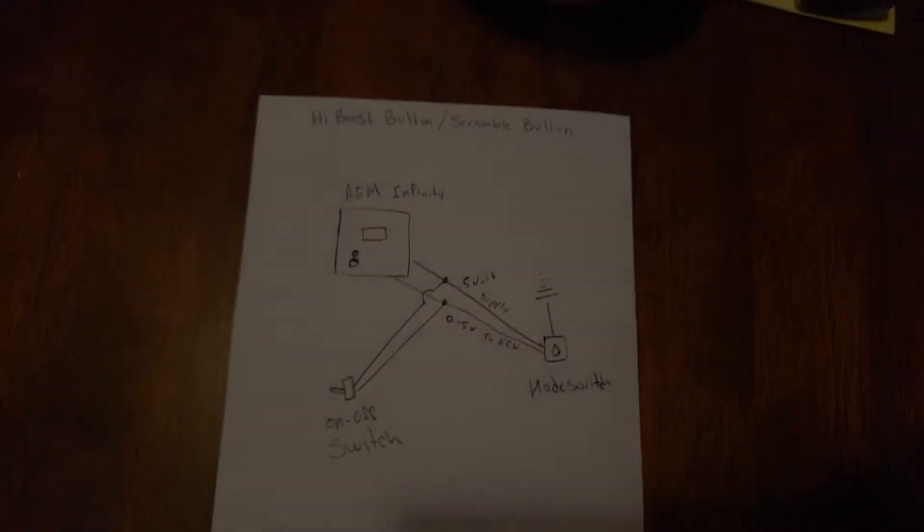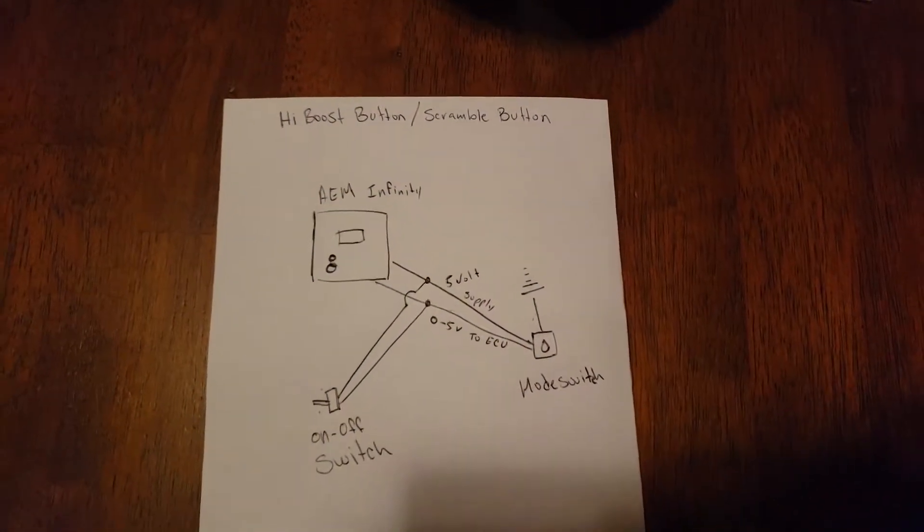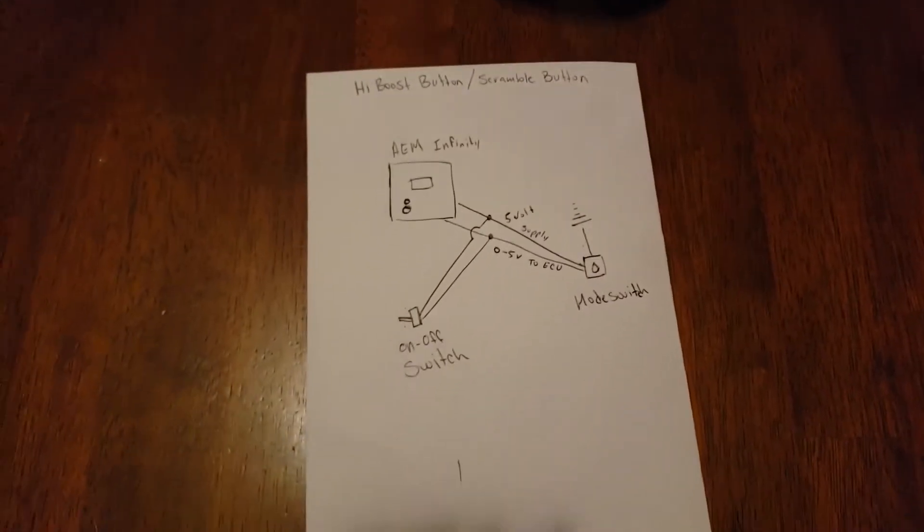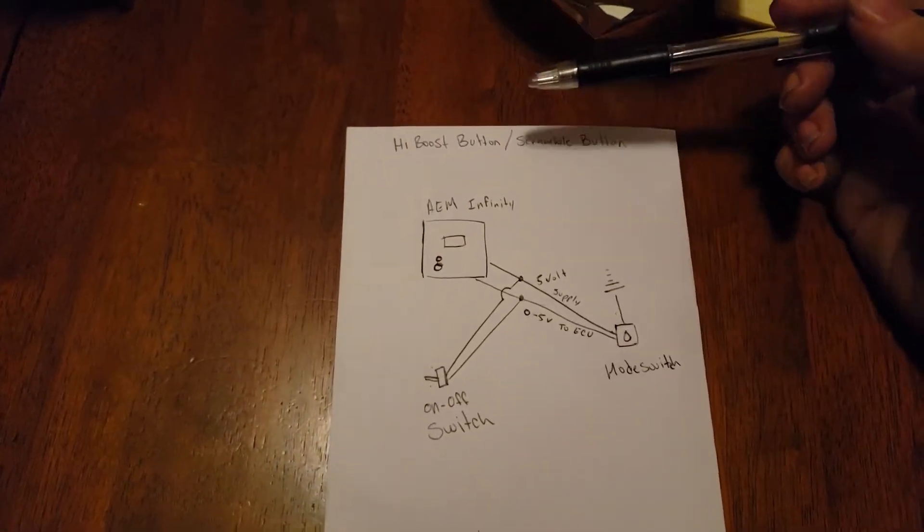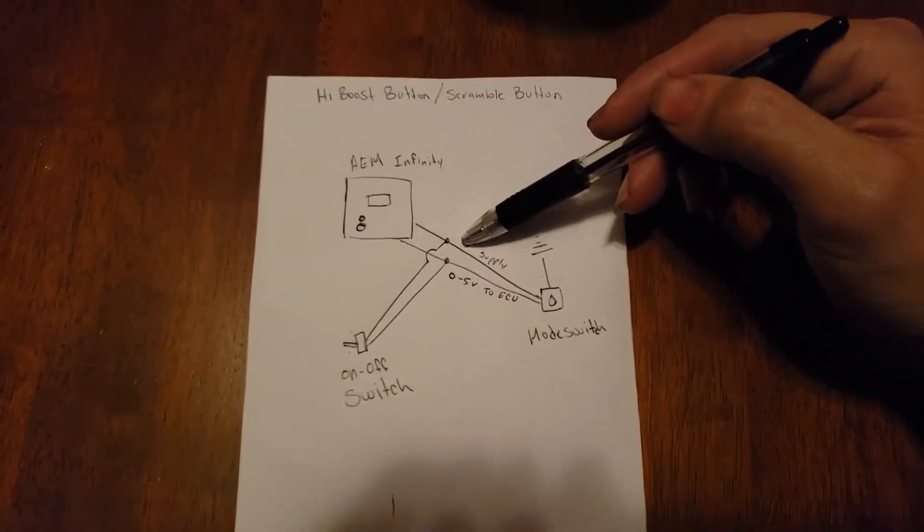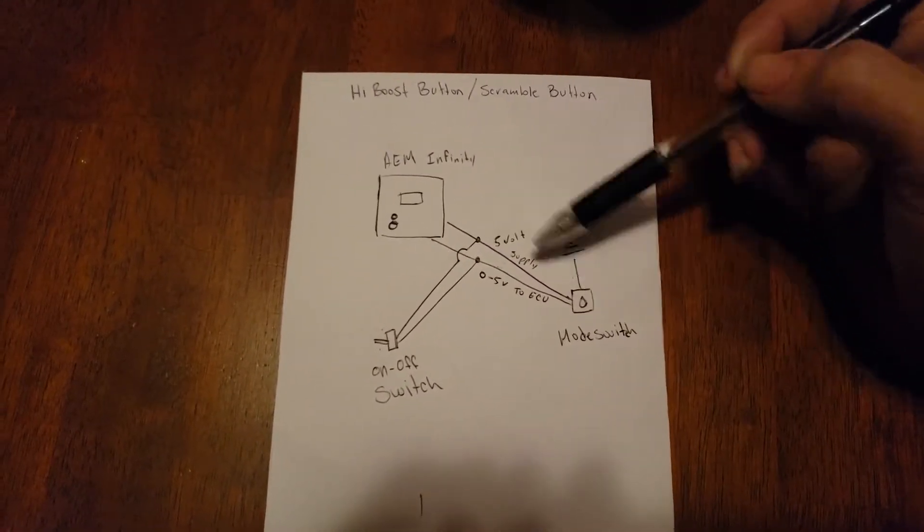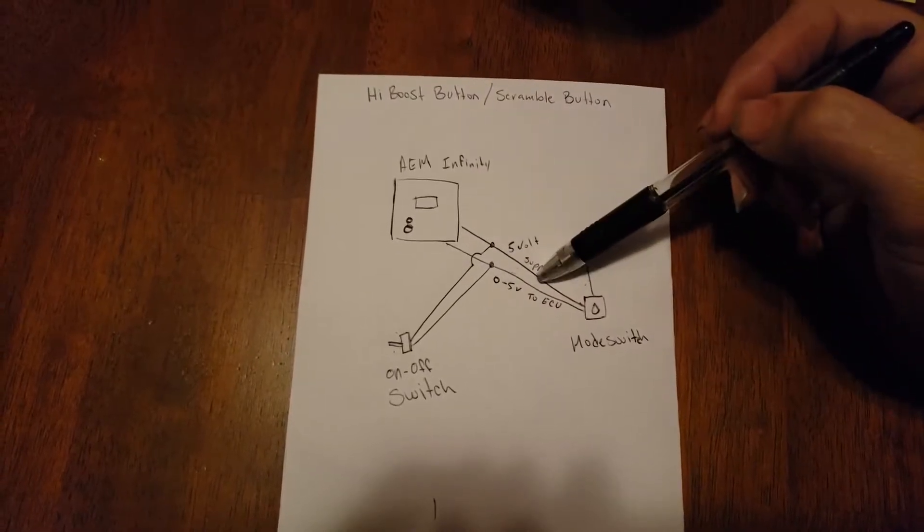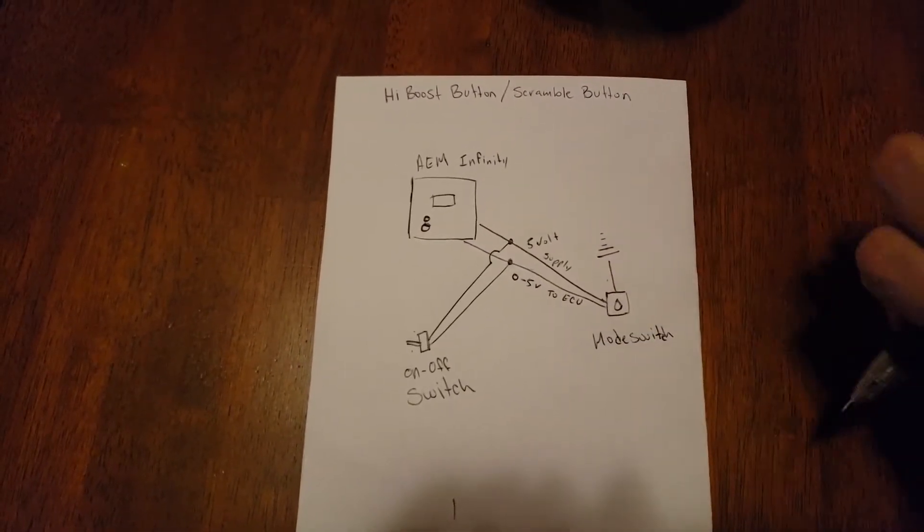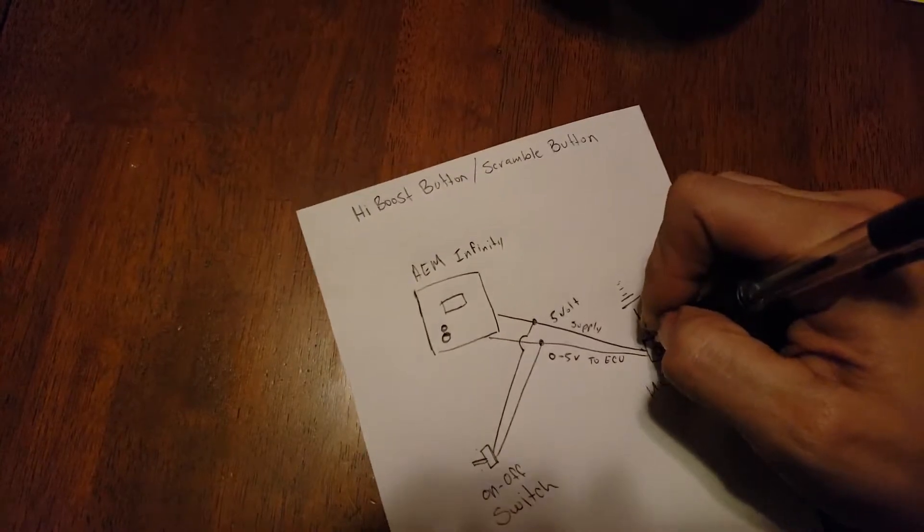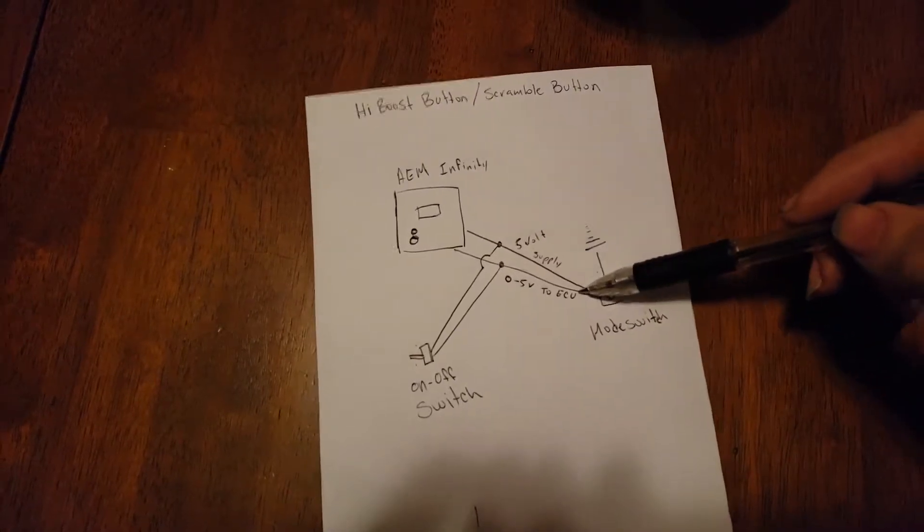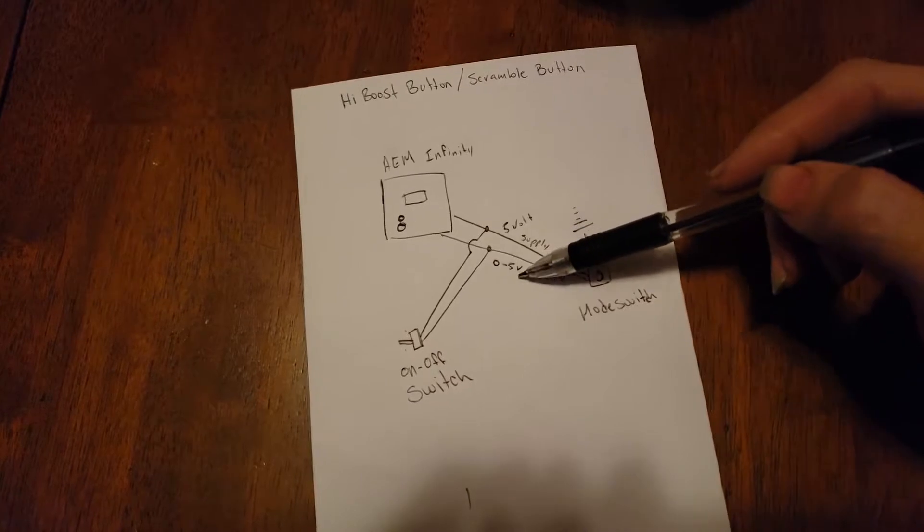So if I can make this a little bit more understanding, here's the diagram basically. You have the Infinity, and you have the five volt supply. This is the mode switch. You got the ground, you got the supply, and then you got the zero to five volt. That's when you select each one of these from one through whatever. That basically sends different signals, anywhere from zero to five volts.